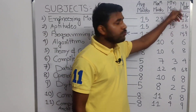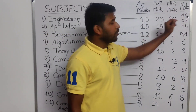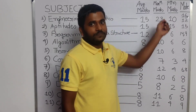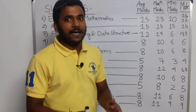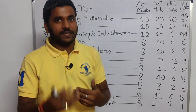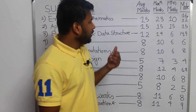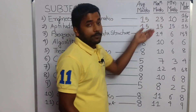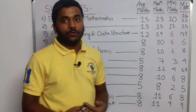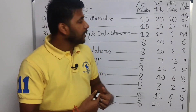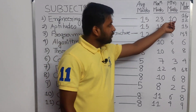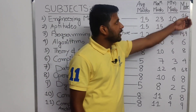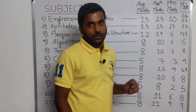The minimum marks in Engineering Maths is 10. The mode — meaning the marks value that appeared most frequently — is 16 and 12. So the mode is 16 and 12. Maximum you can get is 23 marks from maths. Average is 15, minimum is 10, and the most frequent values are 16 and 12.